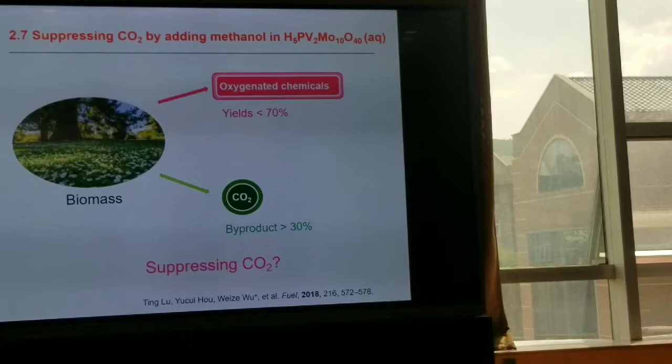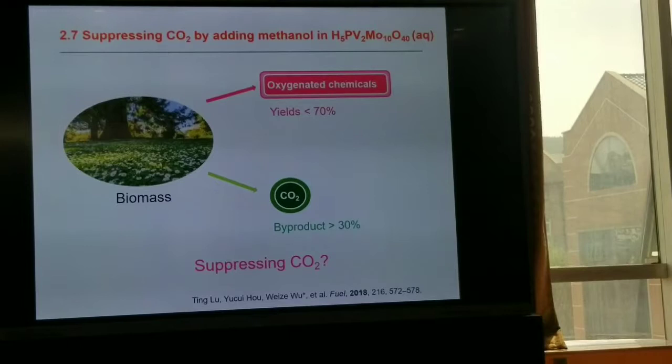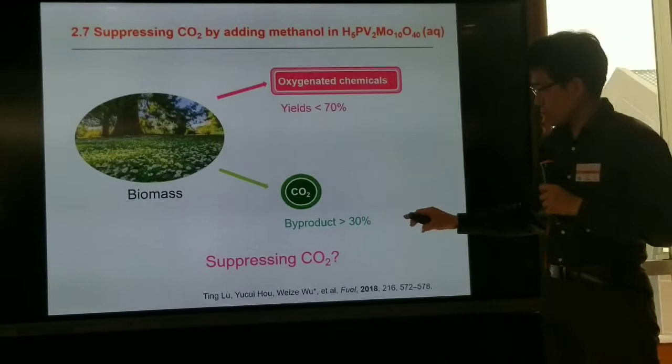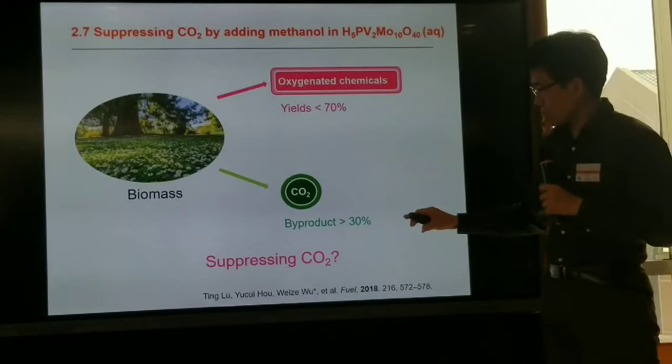The two-catalyst hydrolysis and oxidation system converts biomass to formic acid and acetic acid with yield much higher than before, more than 60% on a carbon basis. However, a large amount of CO2 is produced since the conversion is 100%, so CO2 yield is more than 30%. The question is how to inhibit CO2 production.